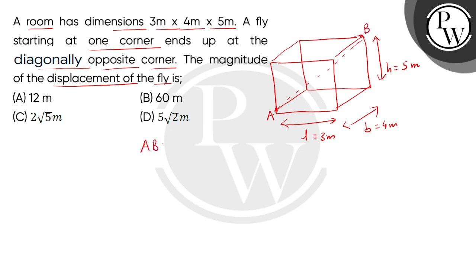We will get the answer AB. The distance travelled by the fly is the square root of L squared plus B squared plus H squared.